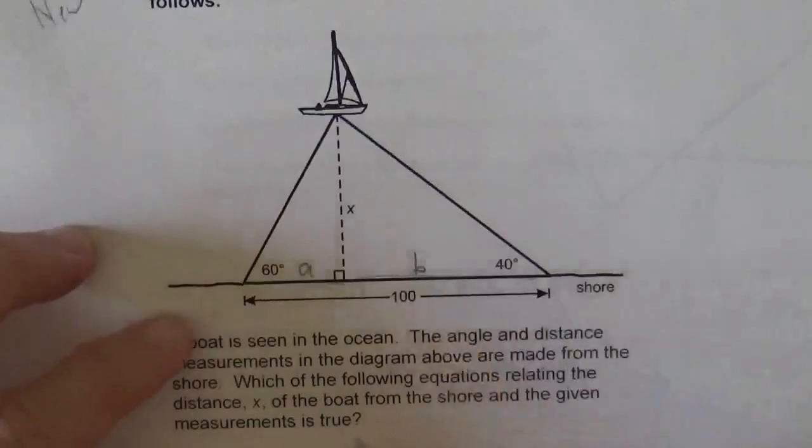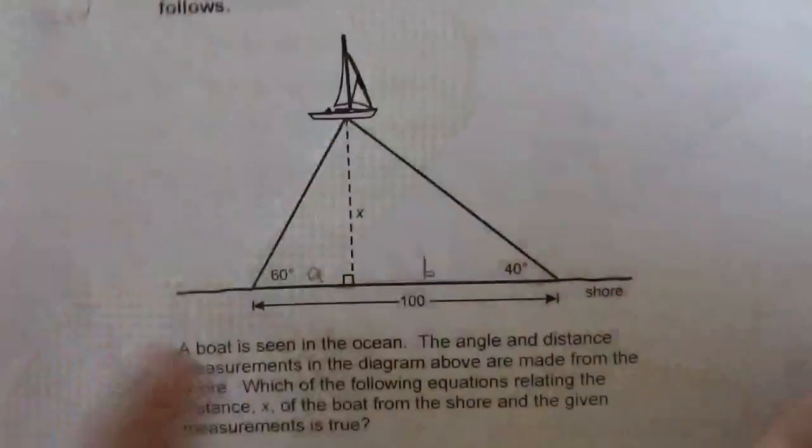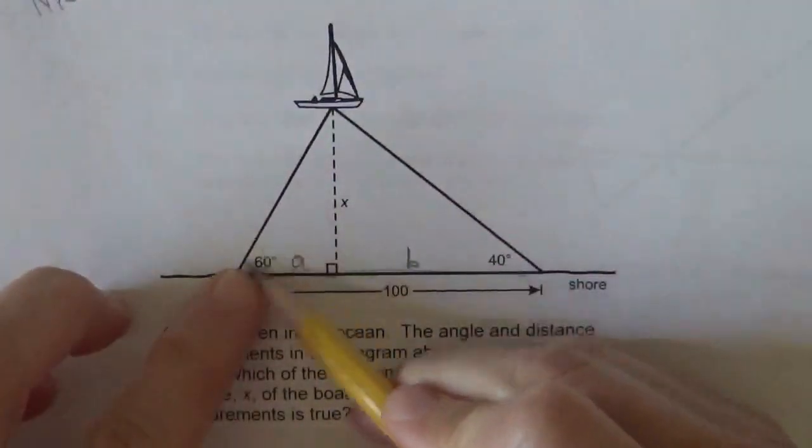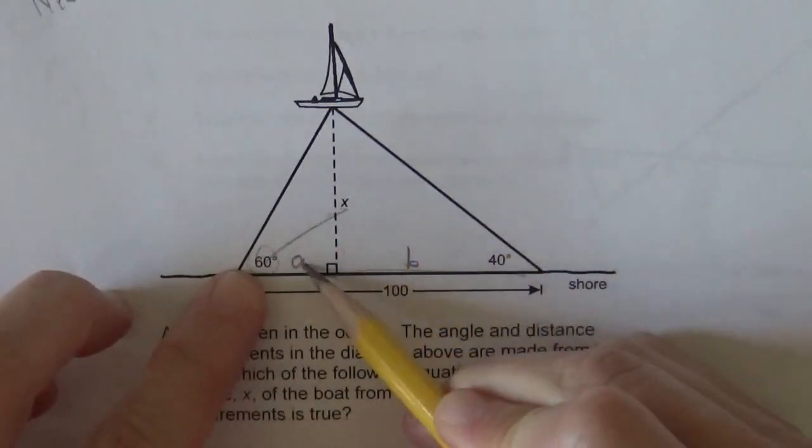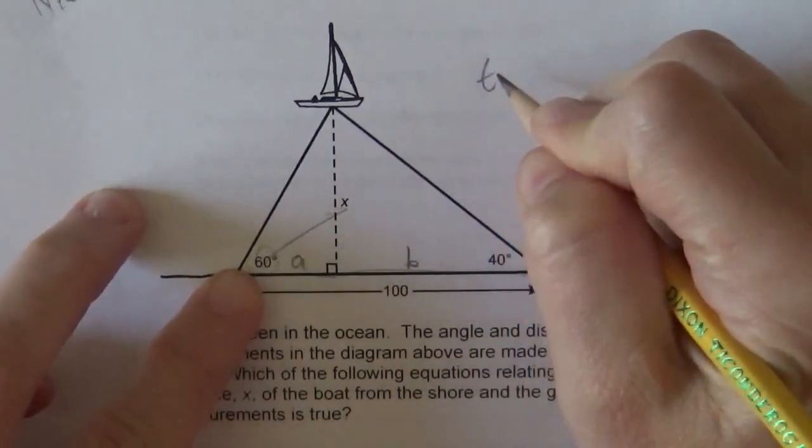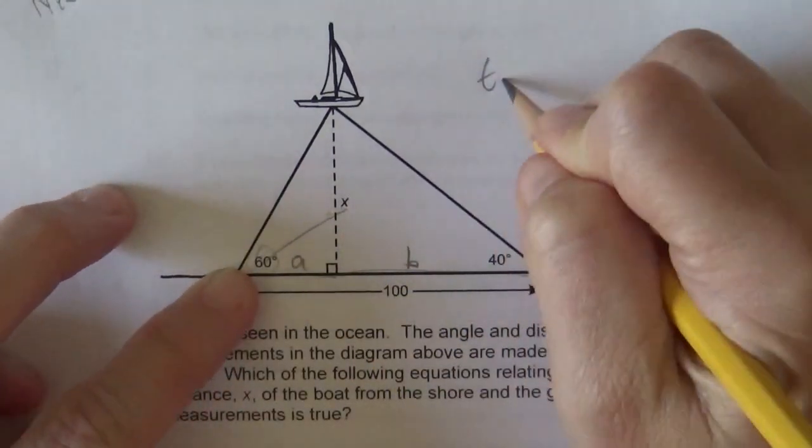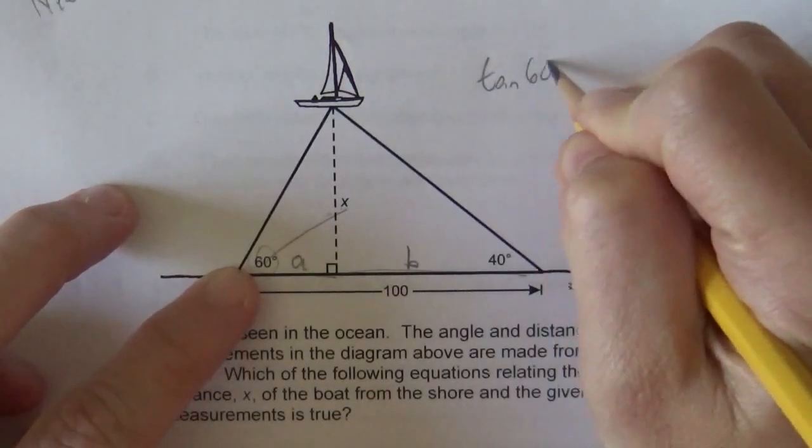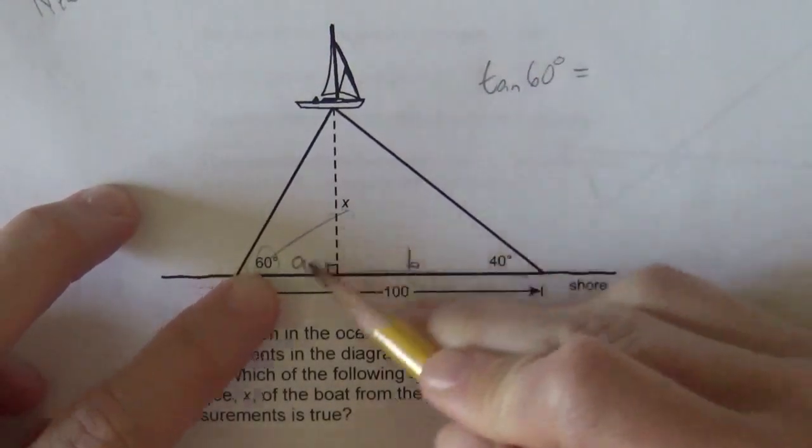And so now, with my trig, I'm going to say that this is opposite and adjacent, so I know that the tangent of 60 degrees will equal x over A.